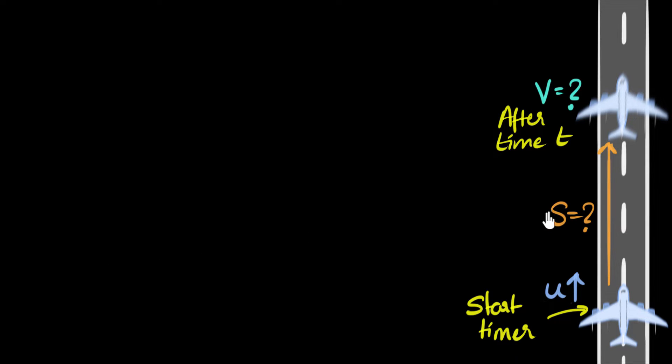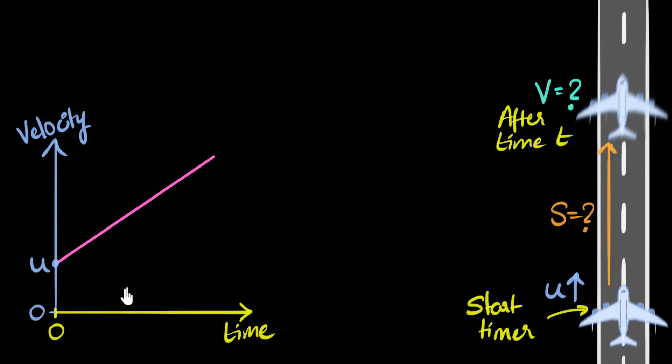One of the ways to calculate them and build equations is by drawing a velocity time graph. Look at this graph. It's also telling us the same story. When we start our timer, that's when time is zero, the velocity of the aeroplane is u. And after time t, the new velocity of our aeroplane is v. A very important thing to notice is, because we've drawn a straight line, this means that the acceleration of our aeroplane is a constant.